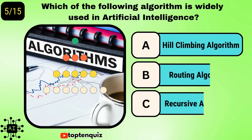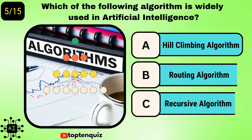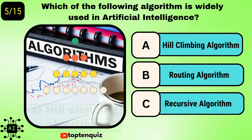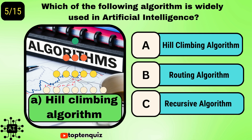Question number 5: Which of the following algorithms is widely used in artificial intelligence? The answer is the hill-climbing algorithm.